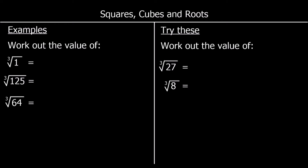Cube roots: the opposite of cubing a number is cube rooting a number. When we're looking for a cube root, we're saying what number times itself and then times itself again makes that number. So what number times itself and times itself again makes 1? 1 times 1 times 1 is 1, so the cube root of 1 is 1. What number times itself and times itself again makes 125? 5 times 5 times 5 is 125, so the cube root of 125 is 5.